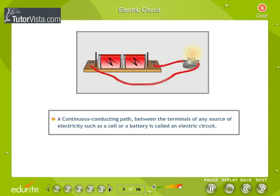Electric circuit: A continuous conducting path between the terminals of any source of electricity, such as a cell or a battery, is called an electric circuit.